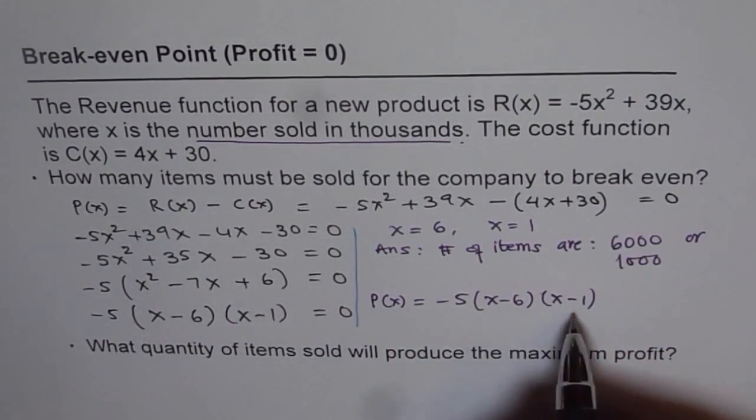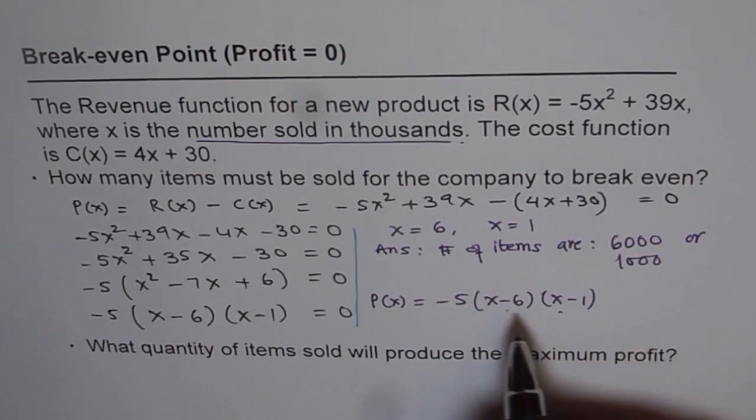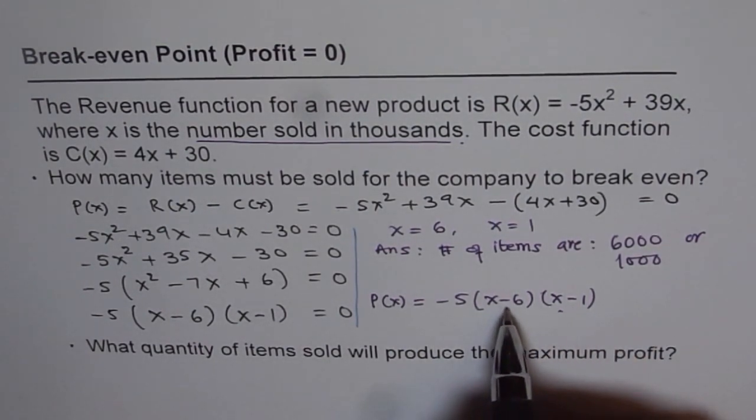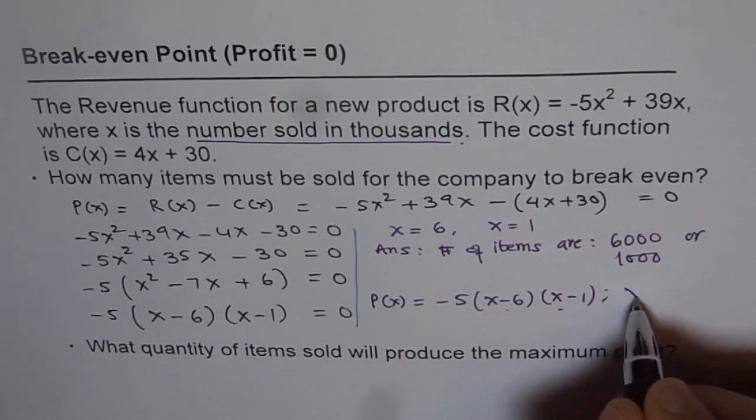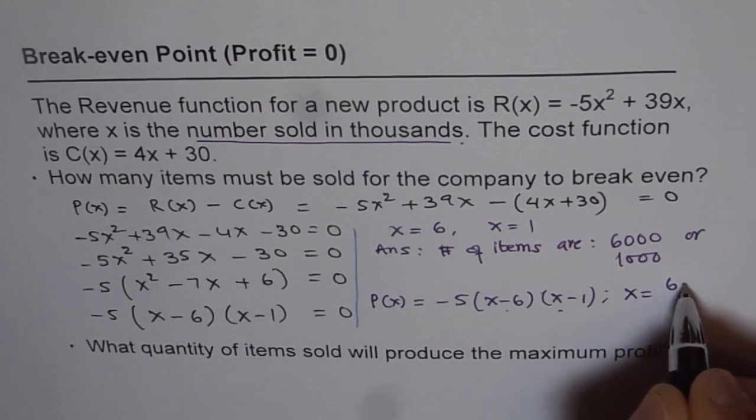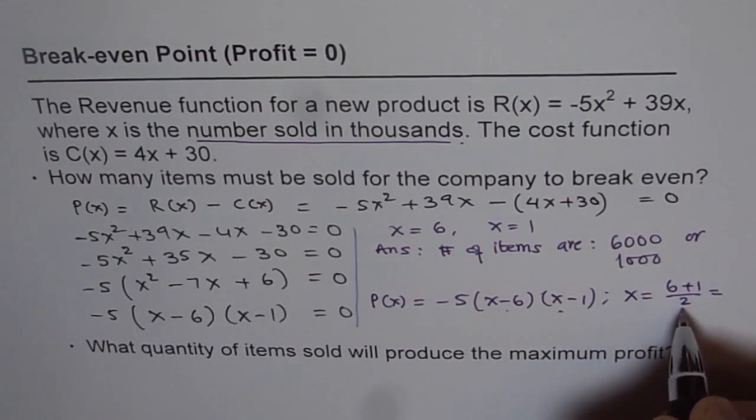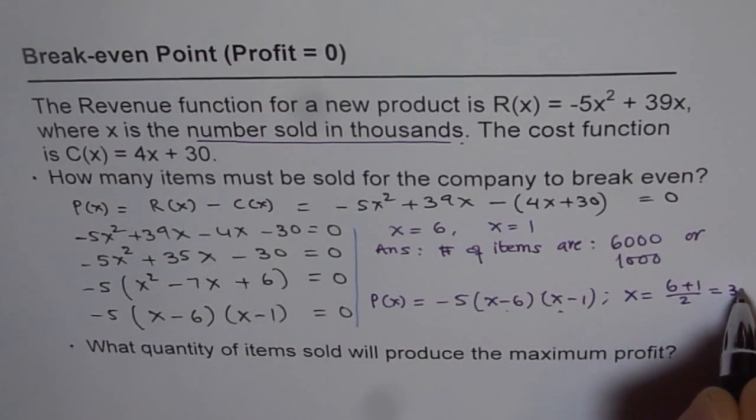Now, to find the maximum, it should be at the axis of symmetry, which is right in the center, mean value of 6 and 1. So we will get maximum profit at x equals (6 plus 1) divided by 2. That is 7 divided by 2, that is 3.5.